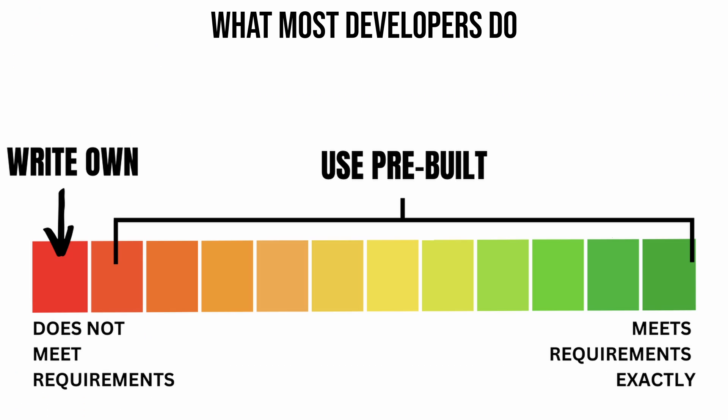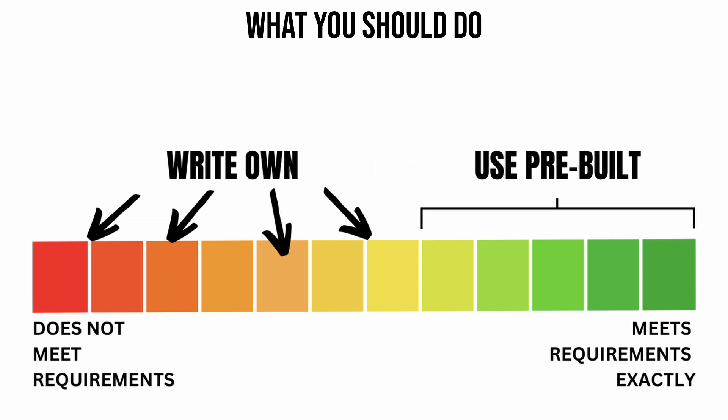The point is that most developers won't even consider writing their own component until all the other options are exhausted — they can't find any component, they've scoured the internet, or their customer or manager is unwilling to move on the requirements. Instead of only choosing to write your own component at the very end of the spectrum when your pre-built component doesn't meet requirements at all, you should be considering your own component at any point along the spectrum. The reason most developers don't do this is because they only take the requirements as the only thing to consider.